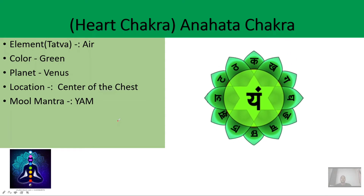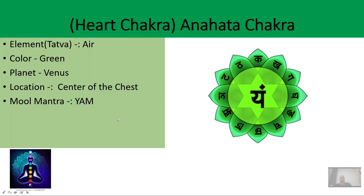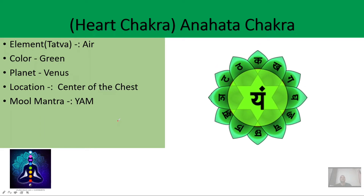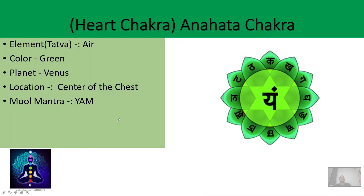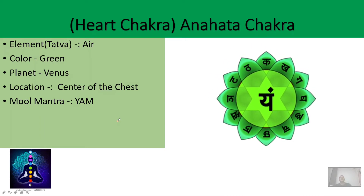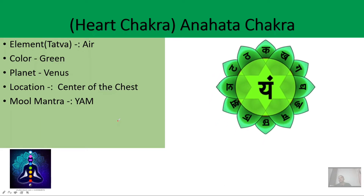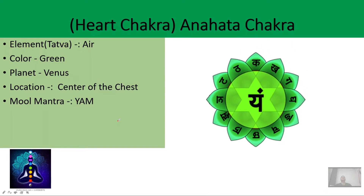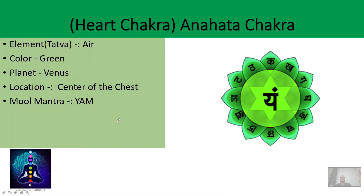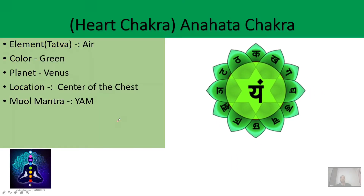The fourth chakra is the heart chakra. It is located in the center of the chest, and it is related to the heart — that's why it is called the heart chakra. In Sanskrit it is called the Anahata chakra. The element of this chakra is air, the color is green, the planet is Venus, and the mula mantra is 'Yam' — you can pronounce it like 'Yam.'